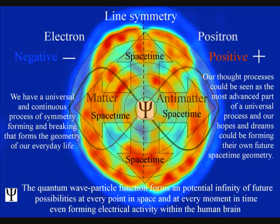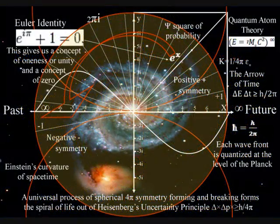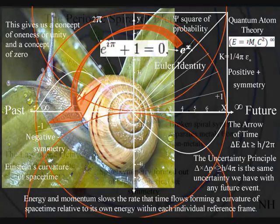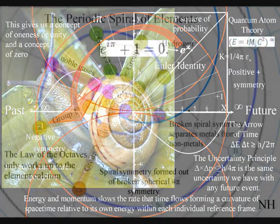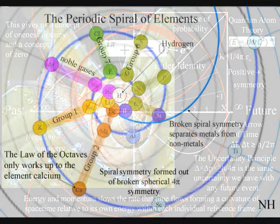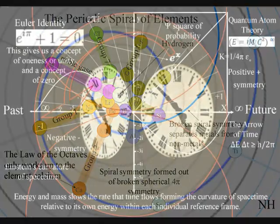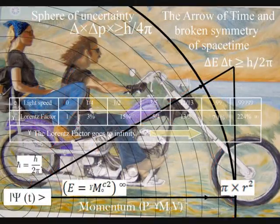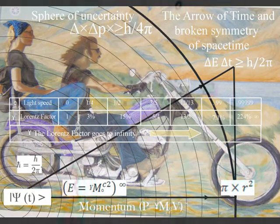This process is totally universal and interactive, from the largest object to the smallest creature, right down to the smallest element of the periodic table, with slow the rate that time flows, forming a curvature of space-time relative to its own energy or mass.